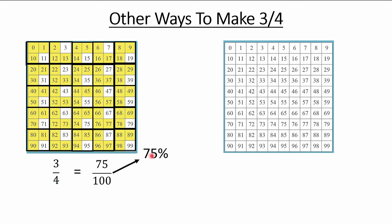Did you notice the denominator is a hundred? Since it's seventy-five hundredths — and remember if I give you a number out of a hundred, I expect you to write it in decimal form — we write decimal 0.75.